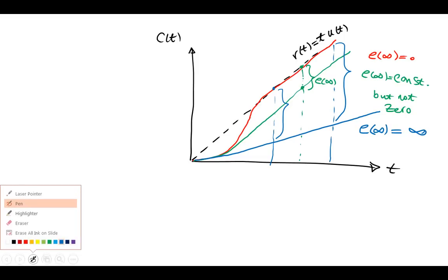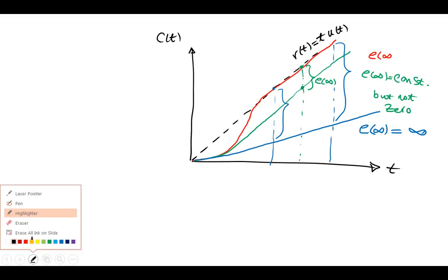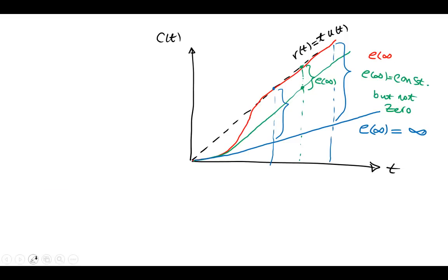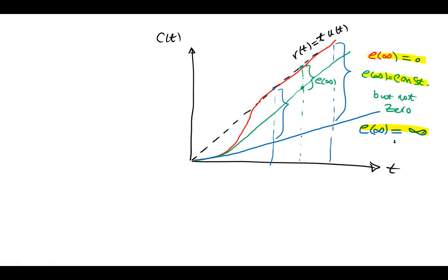So in this part of the course, we are going to check whether E(∞) equals zero, or whether it's a constant, or whether it diverges to infinity. We are going to look at different systems with different inputs.